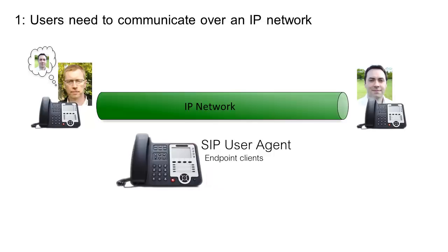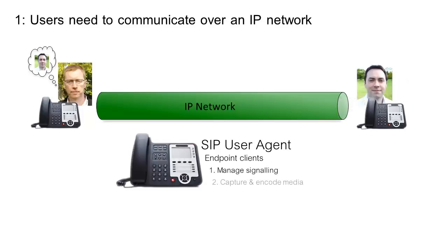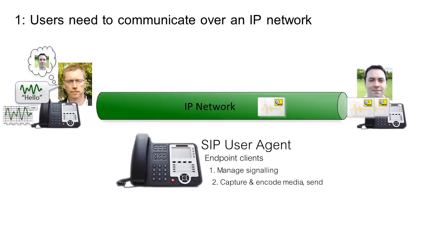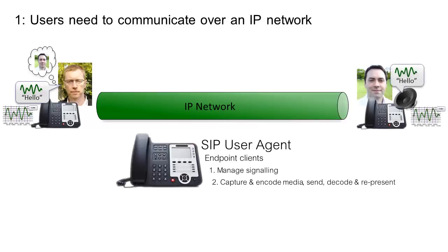The user agent has two main tasks. First, it takes care of signaling to alert the other party. Second, it captures and encodes media and sends out the encoded data over the IP network. The user agent on the other side receives and decodes the media and presents it to the user.